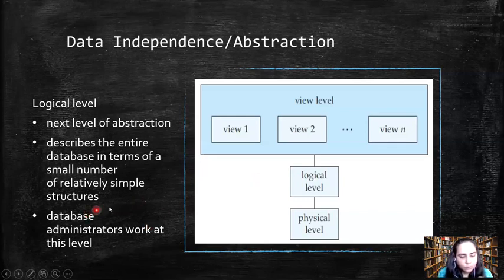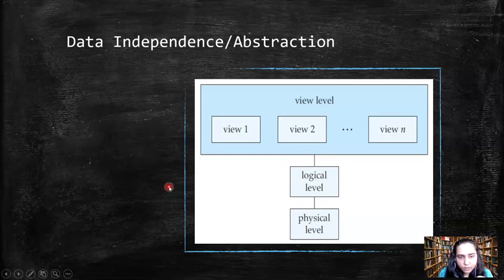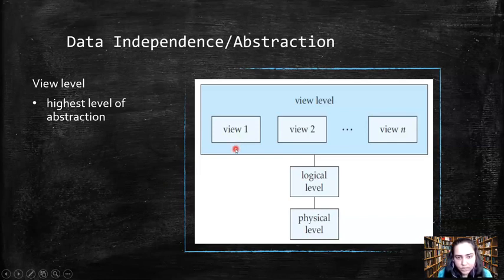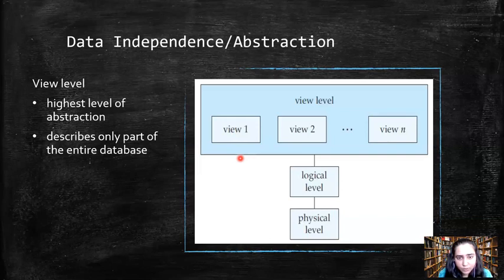In the next video I'll tell you who database administrators are and what they do. For now, you just need to know there are people who work at the logical level and build the database for you. Then we have the view level, which is the highest level of abstraction — the maximum hiding of data is done here. It describes only part of the entire database, which is why different views are created: view one, view two, and so on.